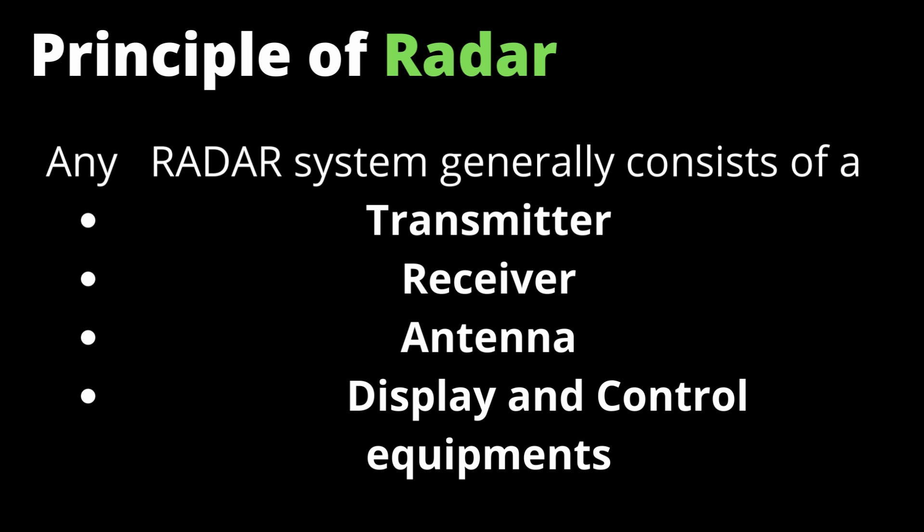Transmitter, Receiver, Antenna, Display and Control Equipment. In this communication system, the transmitter and receiver generate electromagnetic signals. Antennas are used, and the results are displayed on displays and control equipment to control these operations.